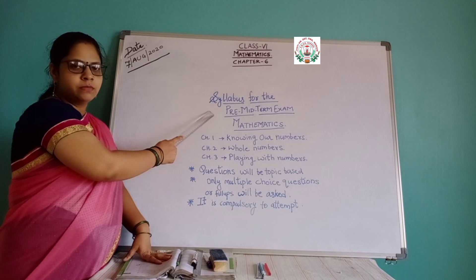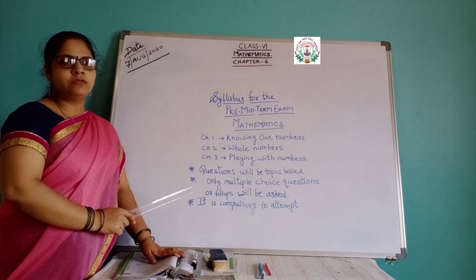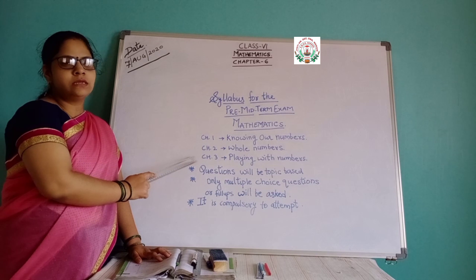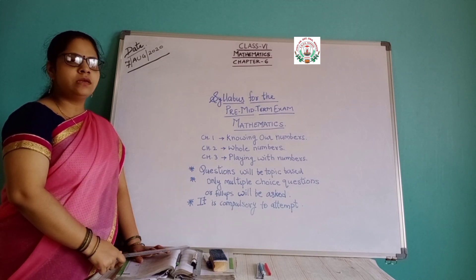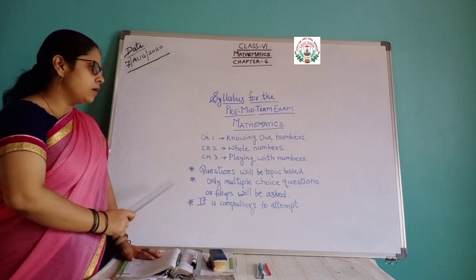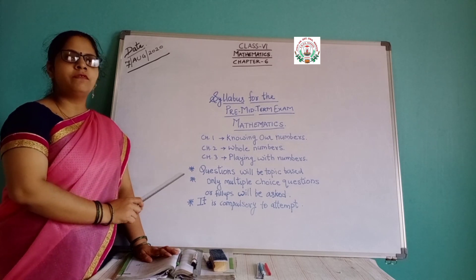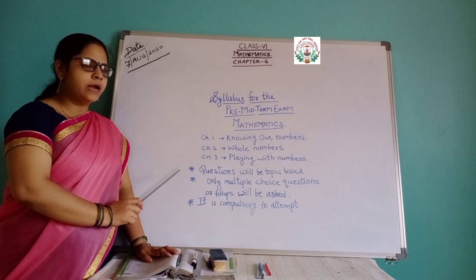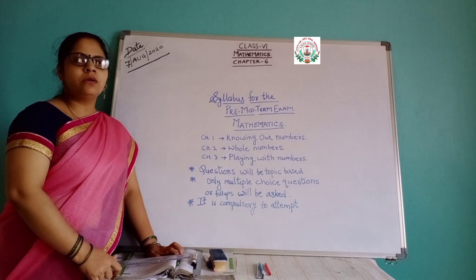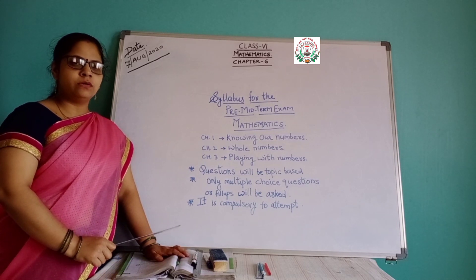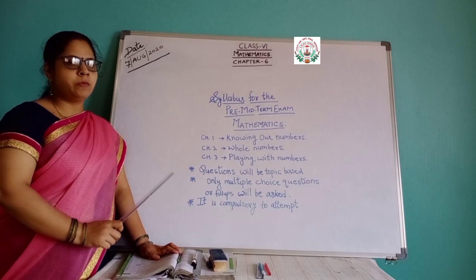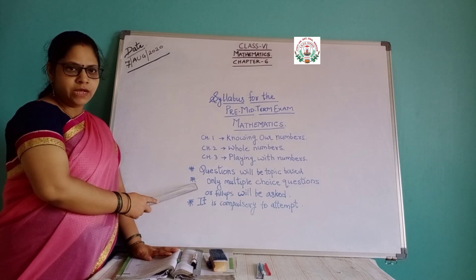Here I am going to give the syllabus for this pre-midterm exam of mathematics. I am going to give 3 chapters: Chapter 1 — Knowing Our Numbers, Chapter 2 — Whole Numbers, Chapter 3 — Playing with Numbers. Questions will be topic-based, and they will be multiple choice questions because this is an online test — you are not going to give a paper-pen test. So it will be objective-based: MCQs, fill in the blanks, or true/false.